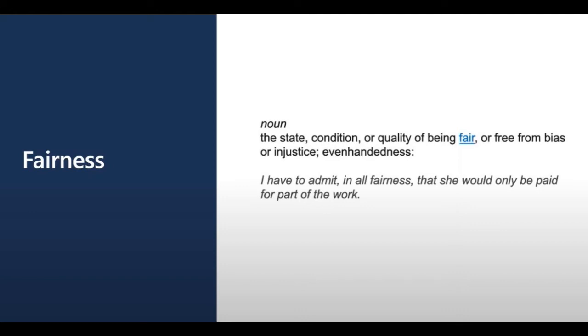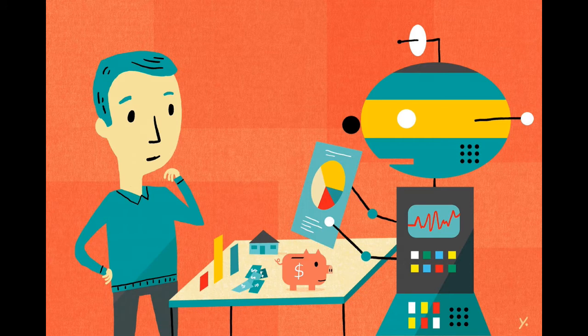Let us explore each. Fairness: AI systems should treat everyone fairly and avoid affecting similarly situated groups of people in different ways. For example, a machine learning model supporting a loan approval application for a bank should make predictions without incorporating any bias based on gender, ethnicity, or other factors that might result in an unfair advantage or disadvantage to any specific group of applicants.